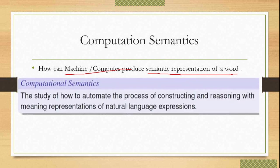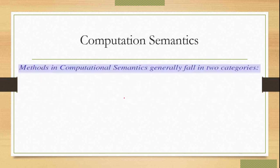So how can computational semantics work? How can the machine or computer produce the semantic representation of a word? It is most important to understand how your machine has generated semantics — how the computer finds out the meaning of a particular word. So that is more challenging.